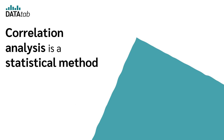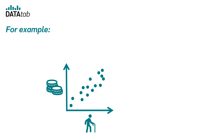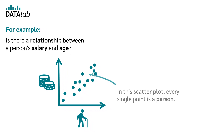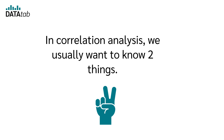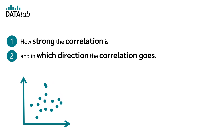Correlation analysis is a statistical method used to measure the relationship between two variables. For example, is there a relationship between a person's salary and age? In this scatterplot, every single point is a person. In correlation analysis, we usually want to know two things: how strong the correlation is, and in which direction the correlation goes.